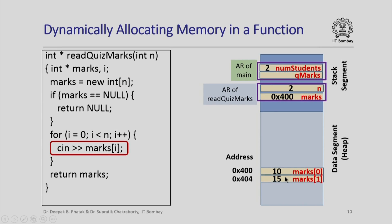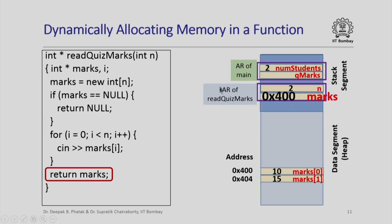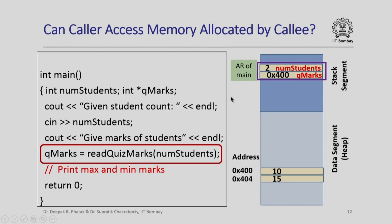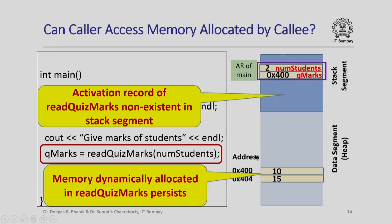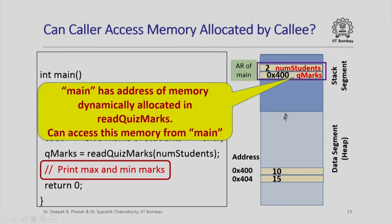In the loop, I read in two integer marks, 10 and 15. When I return marks, the value 0x400 is returned to the main function and the activation record of read_quiz_marks is gone. In the main function, q_marks gets the value 0x400. Note that the two array elements allocated in the data segment have stayed back. Although the activation record of read_quiz_marks is non-existent, the memory dynamically allocated in that function still persists, and the main function has the address of this memory and can access it.